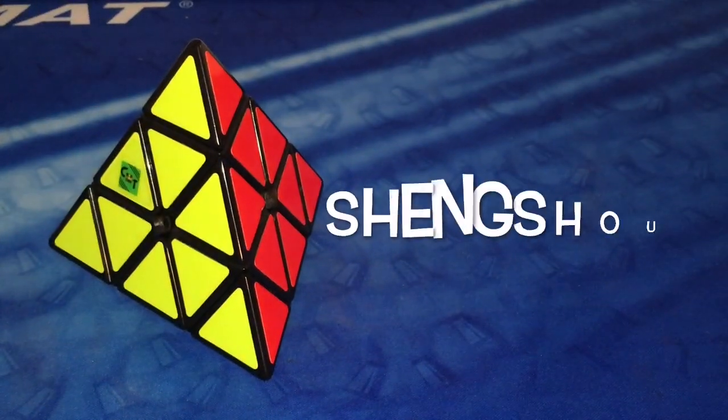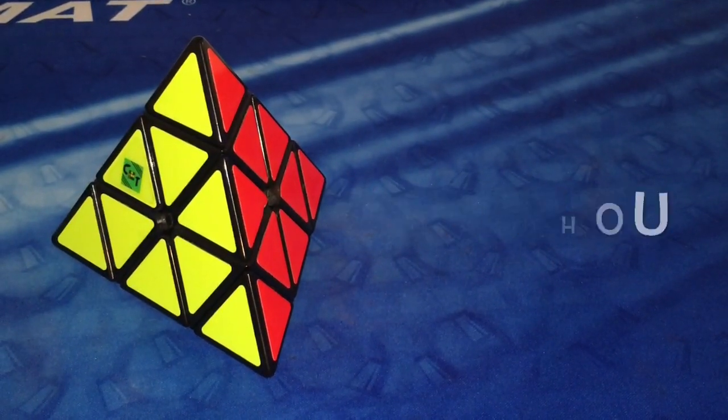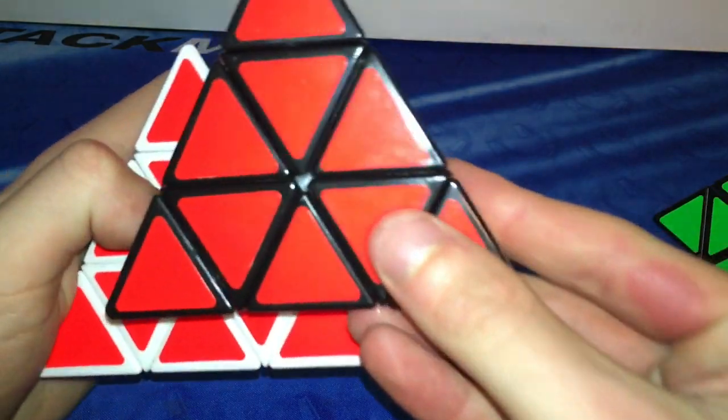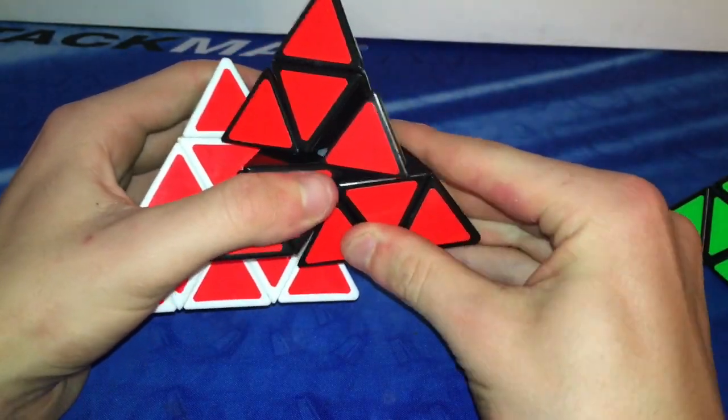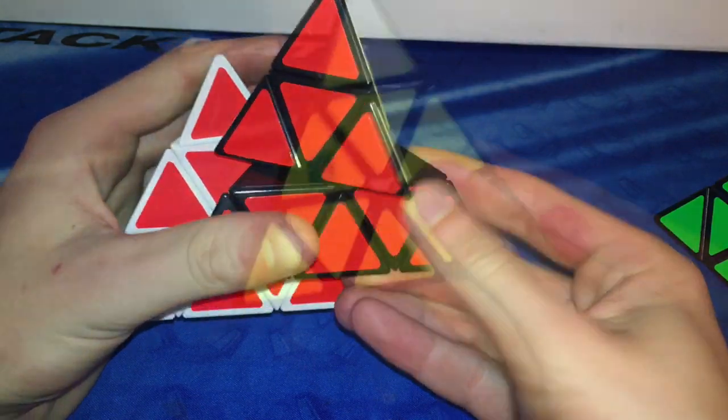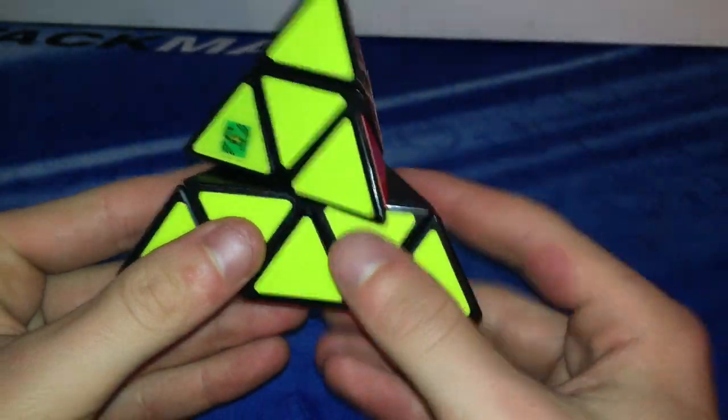Alright, first we have to start out the humble beginnings of the Shang Shao pyraminx. When you first get this puzzle it will be really bad and have no flooring cuts as shown on my Siamese pyraminx. This results in the cube not being able to corner cut at all.